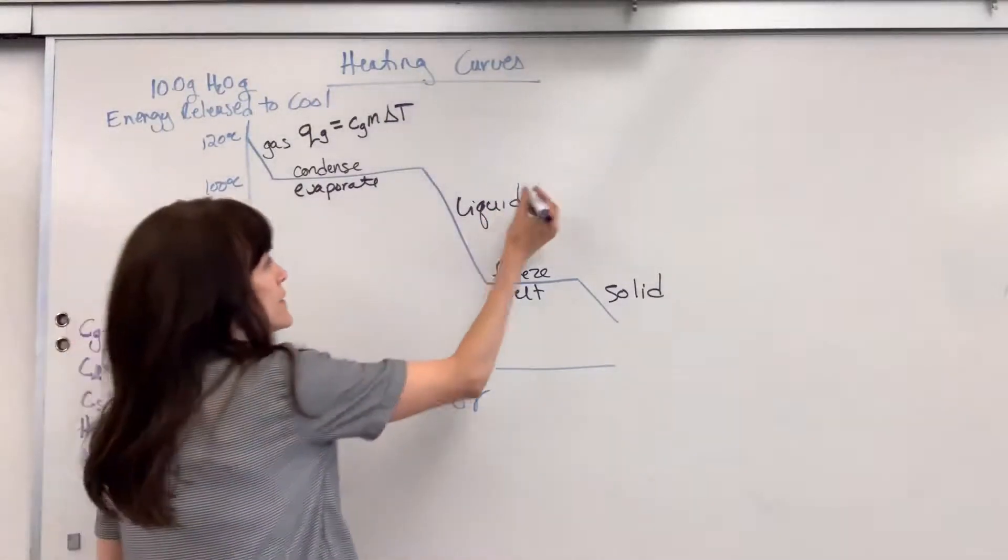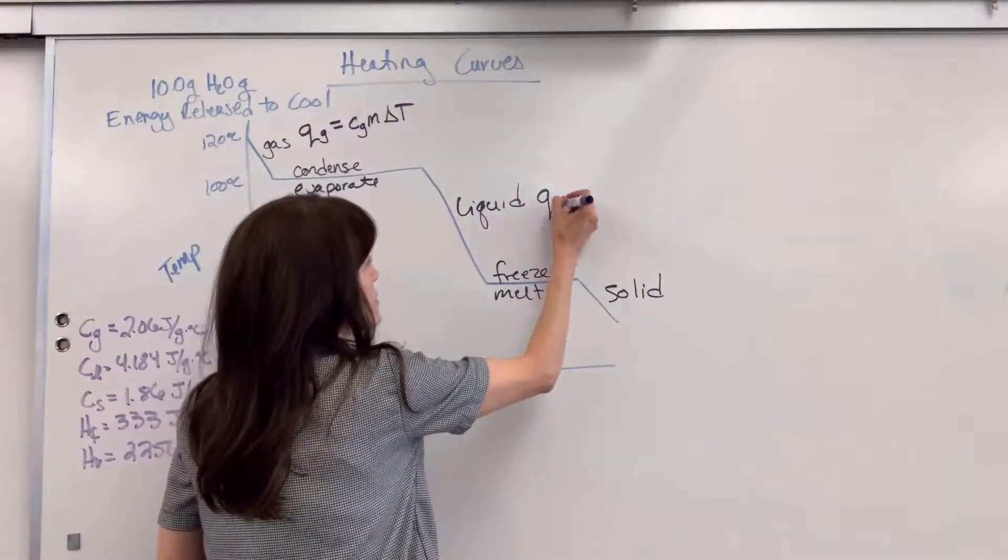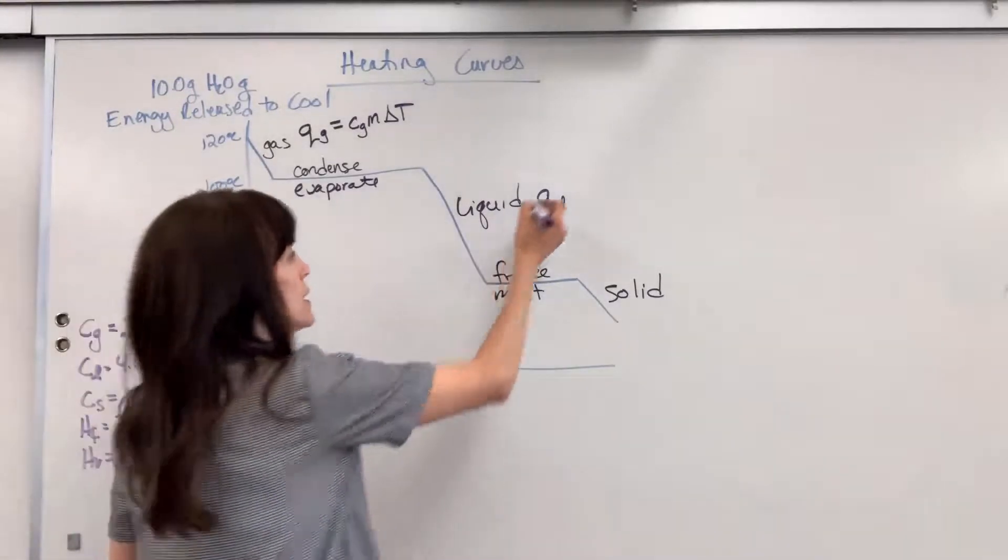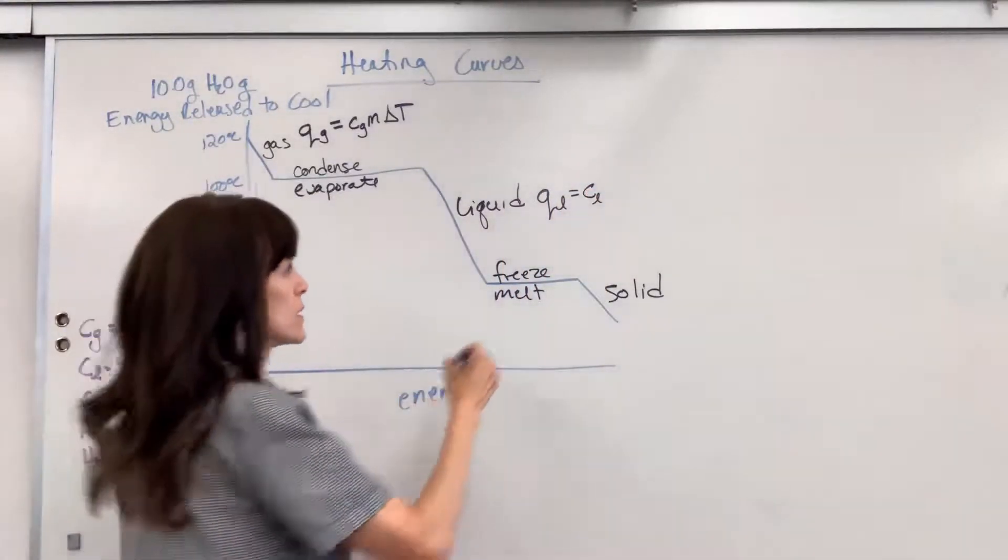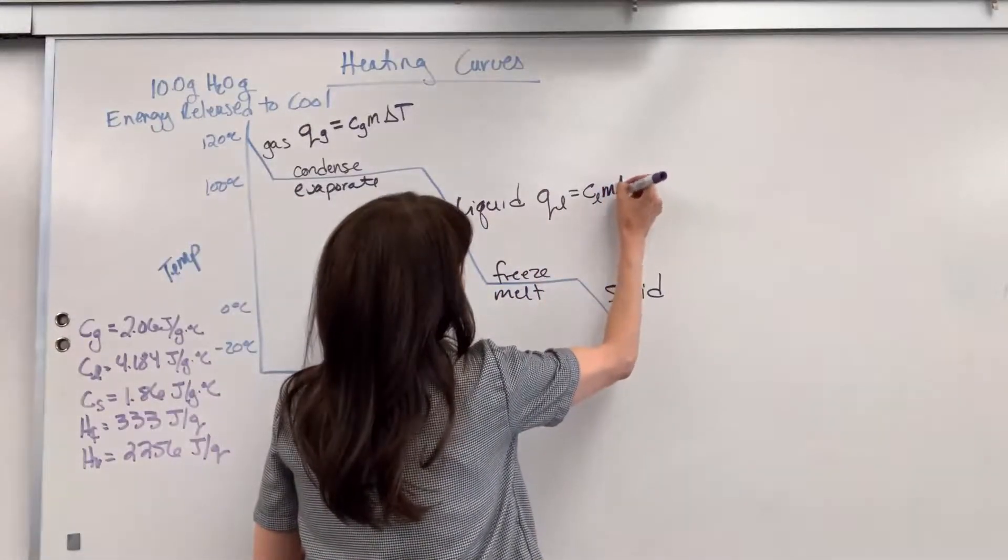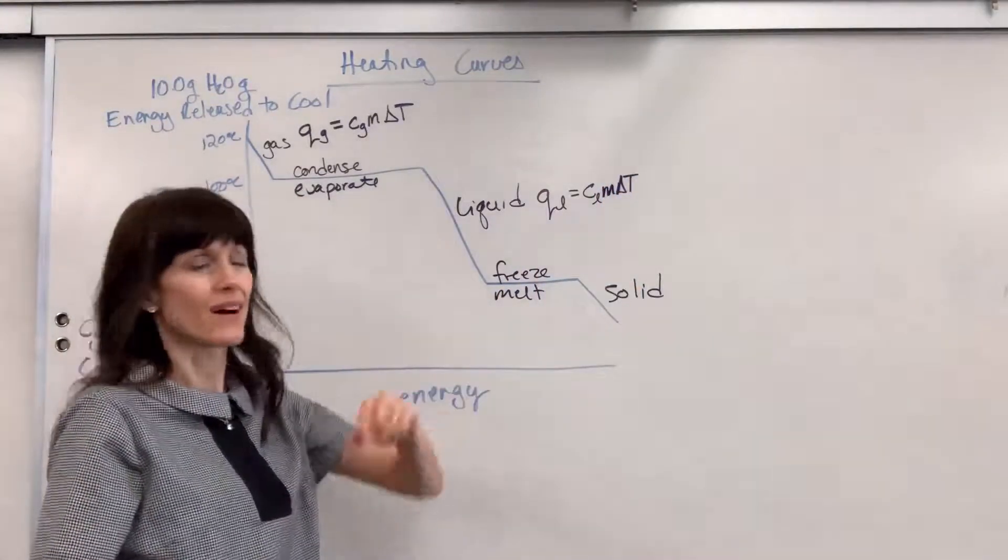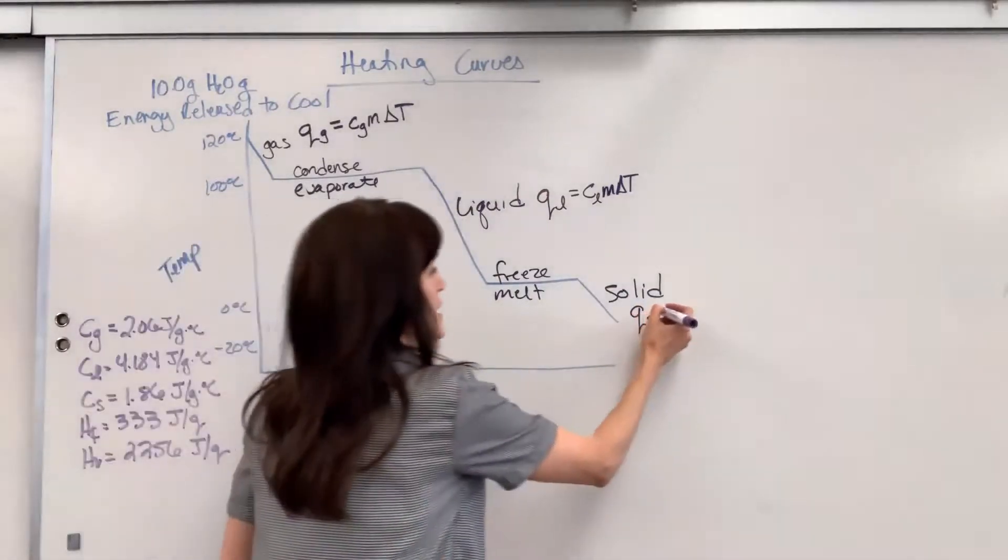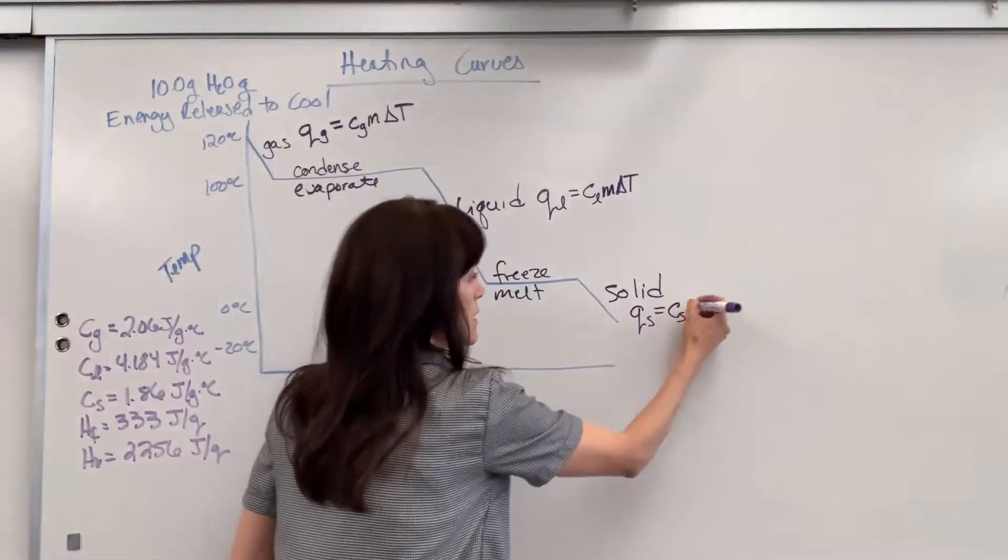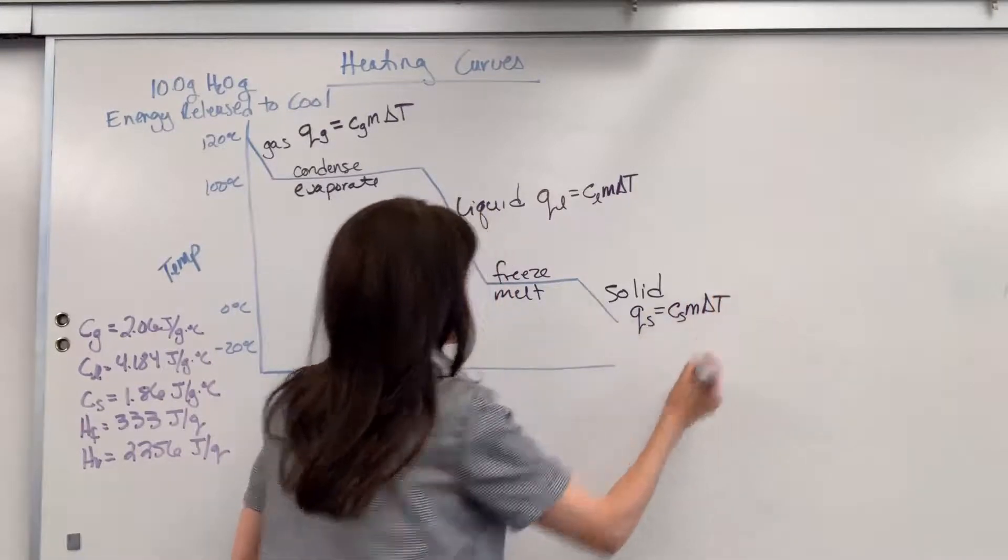So it's going to be C for the gas times the mass times change in temperature. Now for our liquid, this is going to be Q subscript L for liquid equals C of the liquid, specific heat of the liquid, times m delta T. And then solid, this is our Q sub S for solid equals the specific heat of solid times mass times delta T.